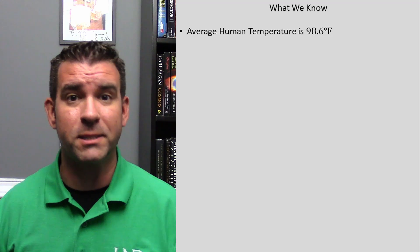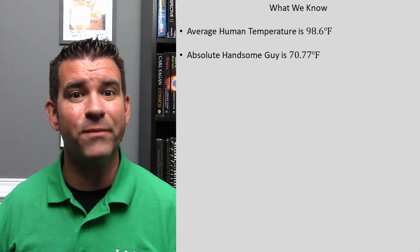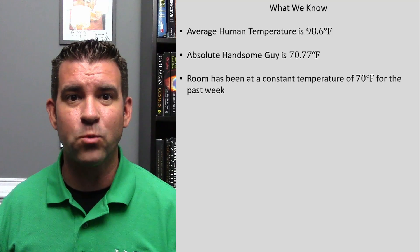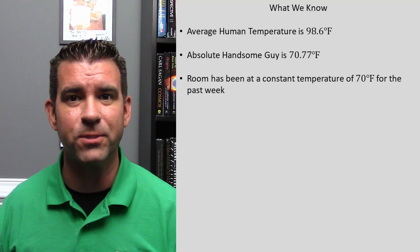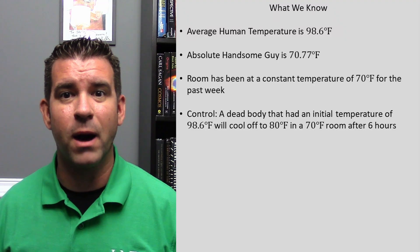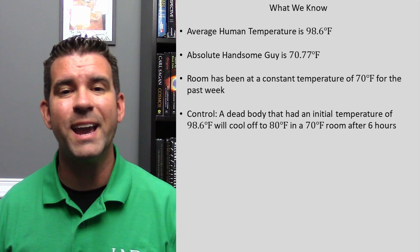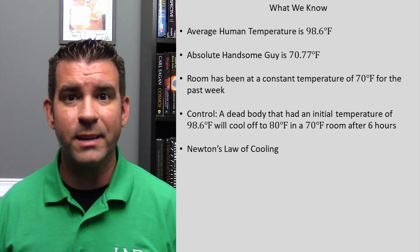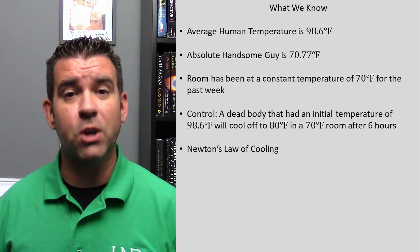Let's look at what we know. The average human temperature is 98.6 degrees. The handsome guy's current temperature is 70.77 degrees. And the room is at a constant temperature of 70 degrees. There are just two more pieces of information we need. First is a control — we need to know how quickly a body would cool off in a 70 degree room after a certain period of time. For this scenario, we will say that after 6 hours, a body will cool off to 80 degrees in a 70 degree room. Second is Newton's Law of Cooling, which we will use to solve this problem.